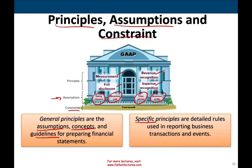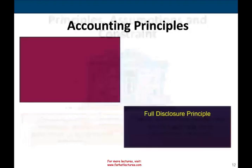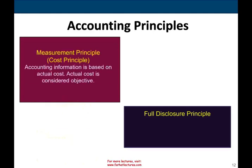The first principle is the cost principle — an important and powerful principle. Simply put, accounting information is based on actual cost. Actual cost is considered objective. For example, when you buy something for $500, you record it at $500 — what you paid for it. It doesn't matter if it's worth $600 or $700. You paid $500, so you record it at $500 because that number is objective.